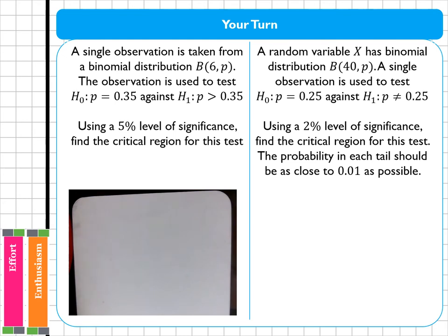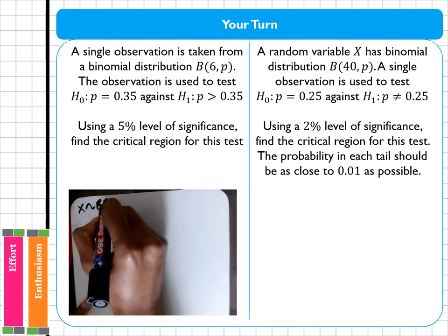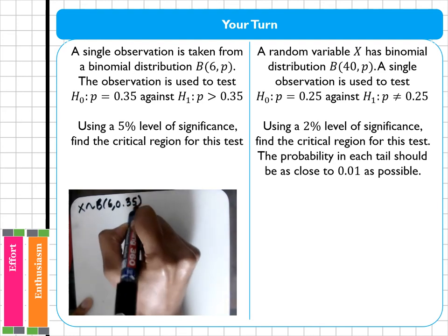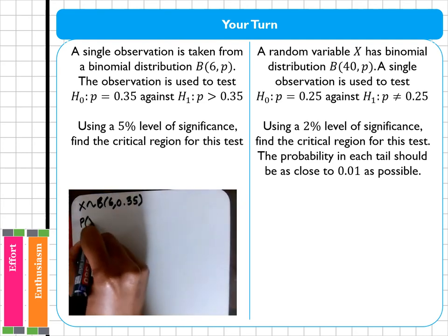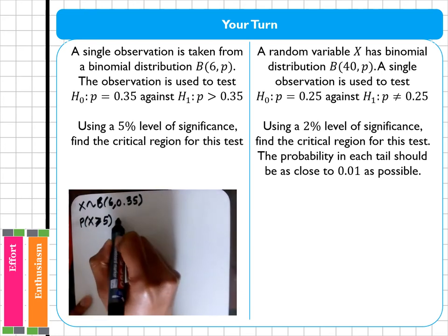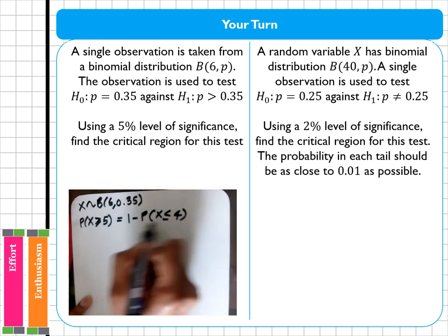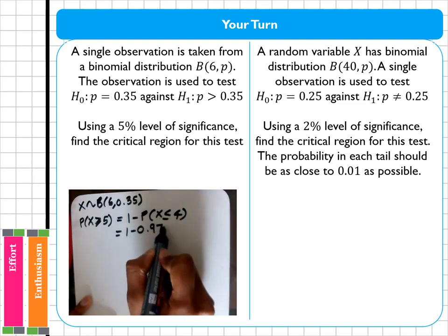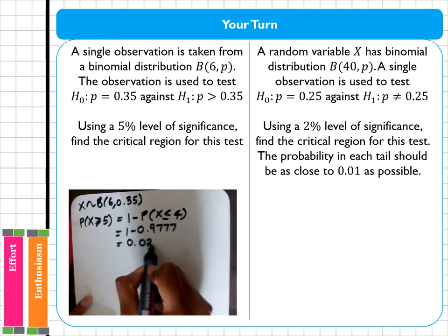Okay, going through the first question, I know I have a binomial distribution where x is distributed with n equal to six and p equal to 0.35. Now if I am doing something six times maximum, I already know that six is quite extreme, so I'm going to start by testing x bigger or equal to five. This is obviously equal to one minus the probability of x being less than or equal to four. When I plug that into my calculator I get one minus 0.9777 which is 0.0223.